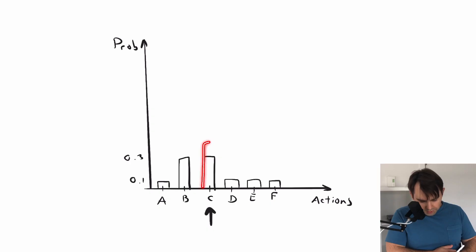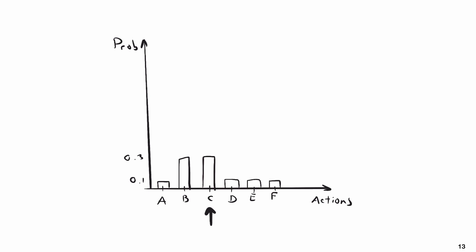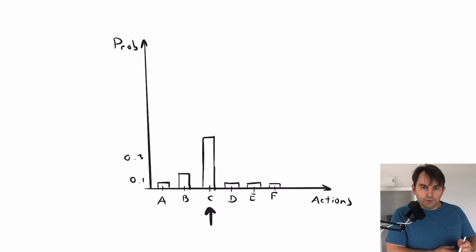So we'll push this action up, we'll make this a bit higher, and we'll make this a bit lower, and we'll make all of these also a bit lower as well. And so the result is this was our previous distribution, and this is our new distribution. Here you can see that this action C now has higher probability. So we pushed that up and brought all the other ones down.